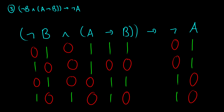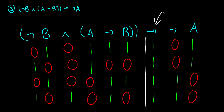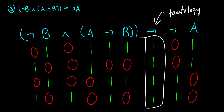We have one more column — the final arrow — taking information from AND and from NOT A. It'll be false only when we have 1, 0. First row: 0, 0 — true. Second row: 0, 0 — true. Third row: 0, 1 — true. Fourth row: 1, 1 — true. All of them are 1s in the final column. Therefore, this is a tautology. Basically, what this says is: A arrow B, and NOT B, therefore NOT A — and that's true no matter what the values of A and B are.